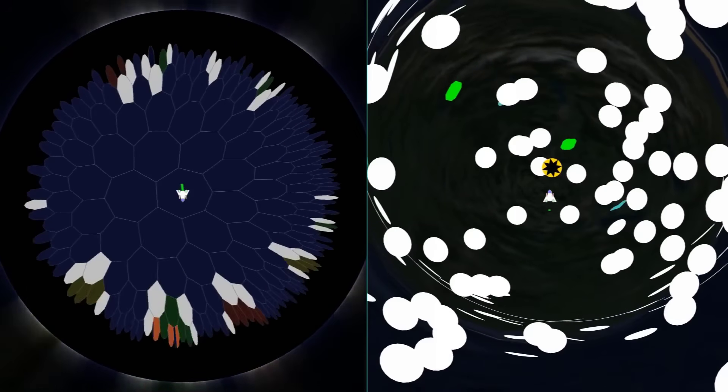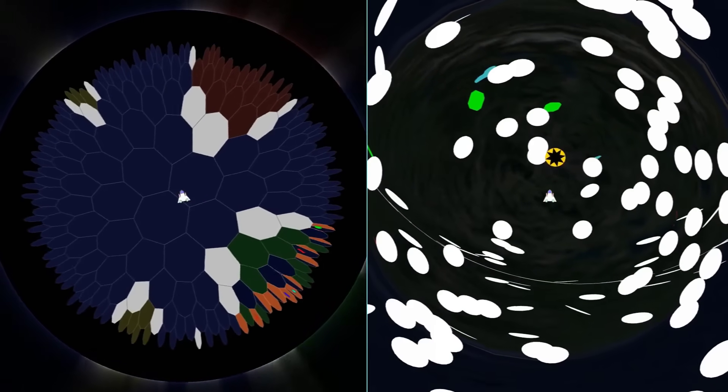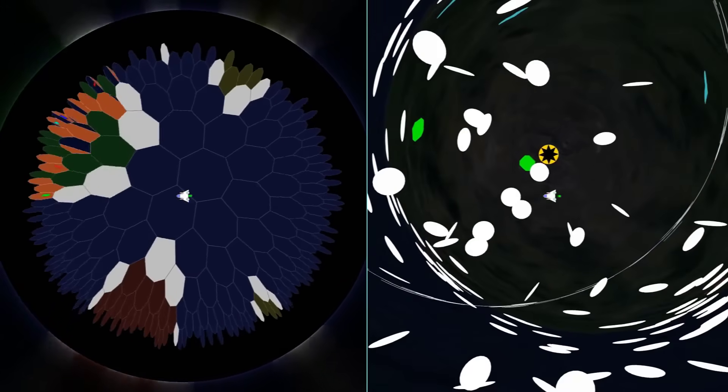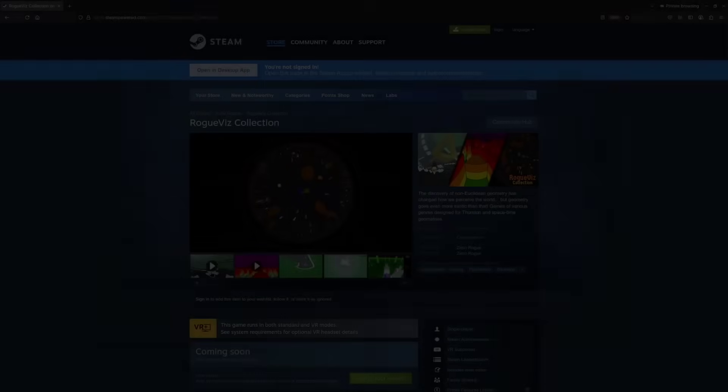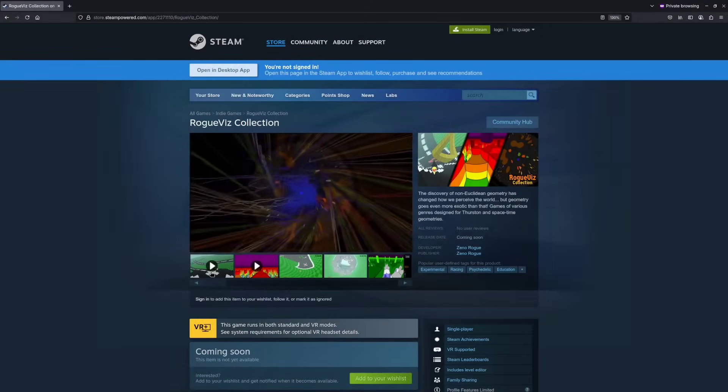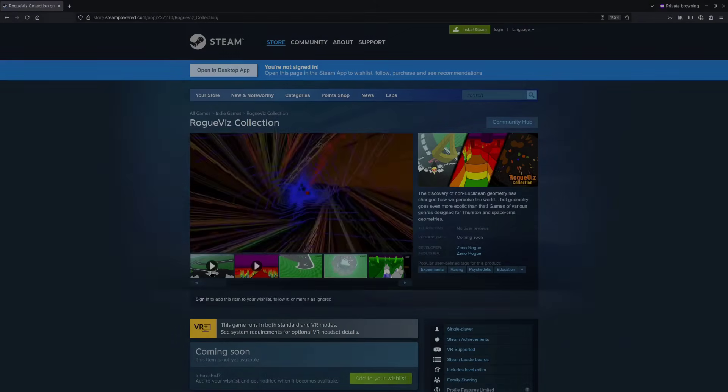So, this is Relative Hell, a pair of games taking place in de Sitter and anti-de Sitter spacetimes. You can play it yourself, either by itself or as a part of the RogueViz collection, which you can wishlist on Steam. See the link in the description. Have fun!